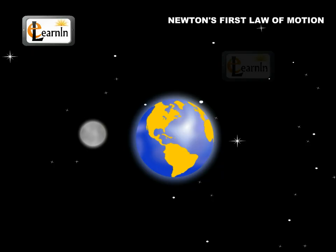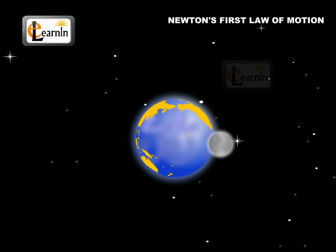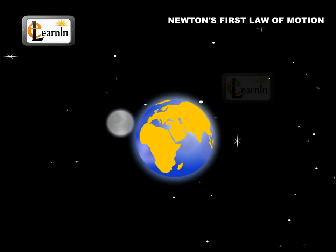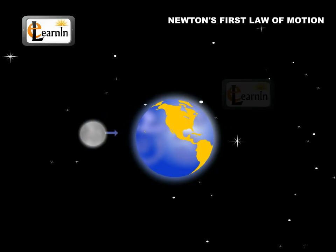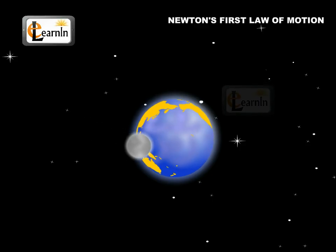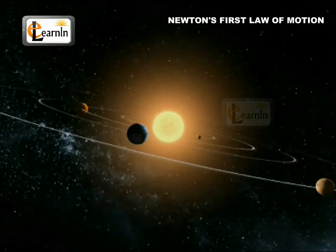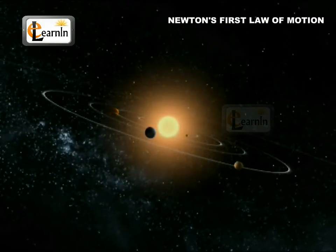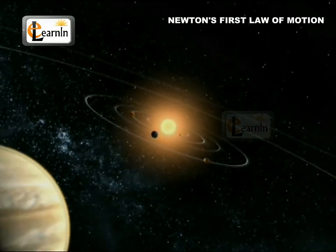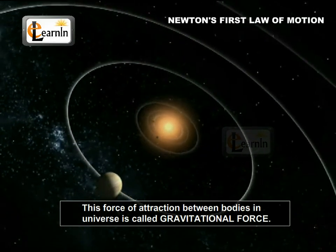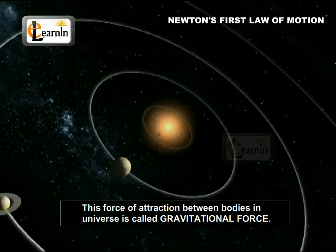The earth attracts all bodies close to it towards the center. The earth even attracts the moon, and those are separated by a large distance. The sun attracts planets which are separated by millions of kilometers because the sun has a very large mass. This force of attraction between bodies in the universe is called gravitational force.